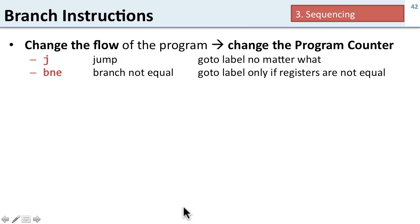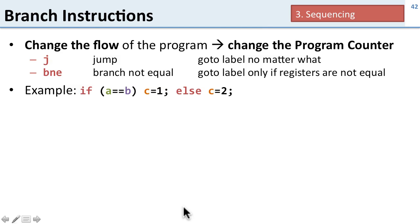These instructions change the program counter and the flow of execution. We've seen two types: jump, which goes to a label unconditionally, and branch not equal and branch equal, which go to a label only if the registers are equal or not equal.